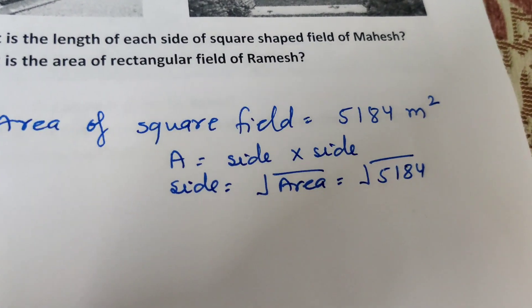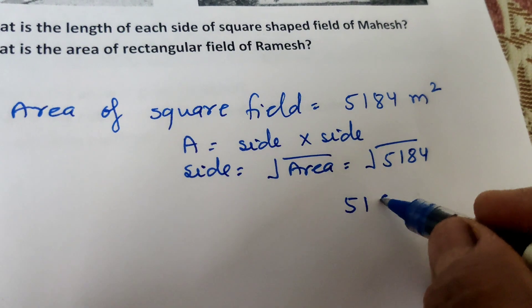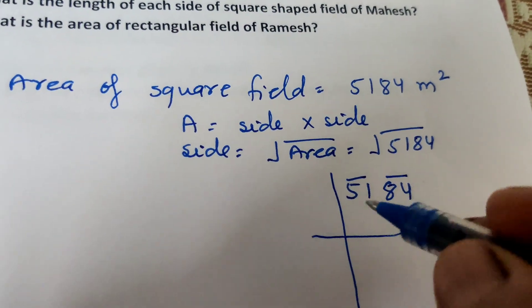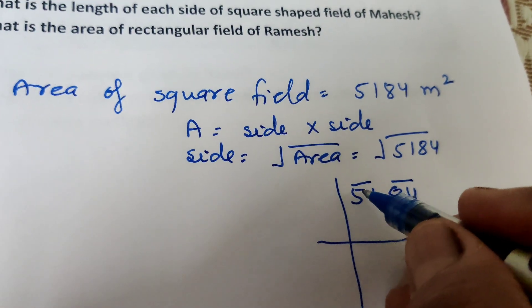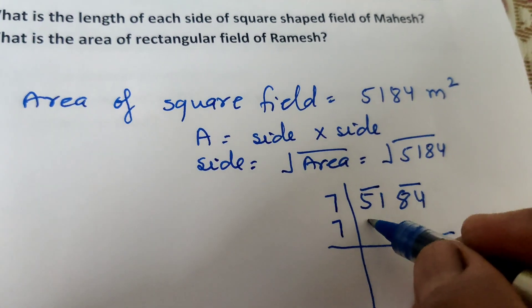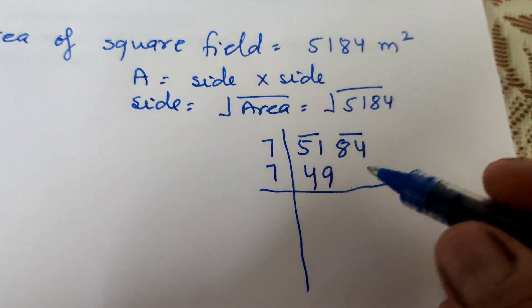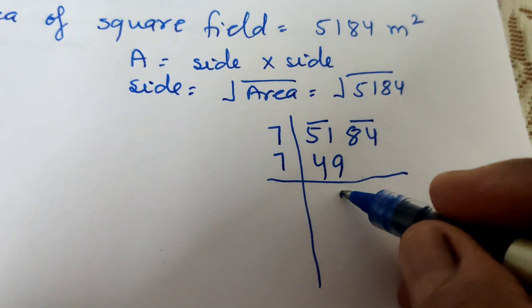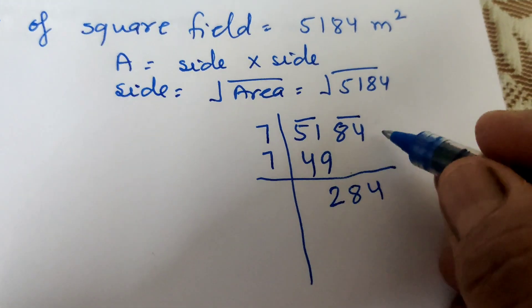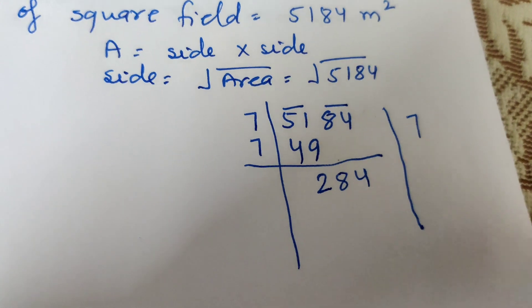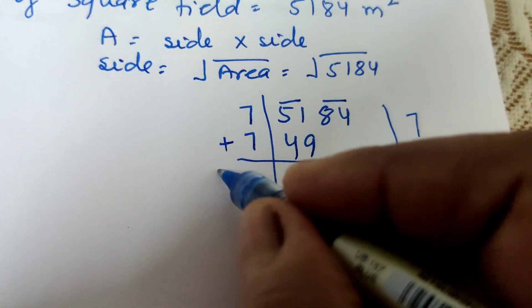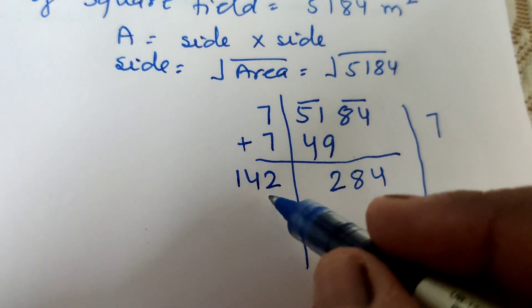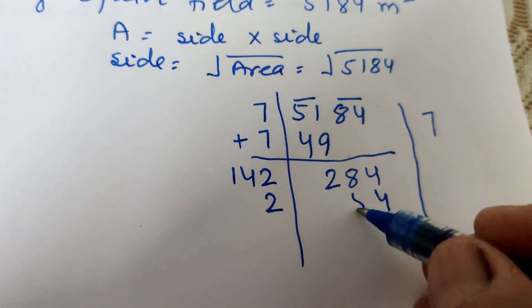Find the square root of 5184 using the long division method by pairing the digits: 84 and 51. For the first pair 51, we find 7 × 7 = 49. For 8 × 8 = 64. For the second pair 84, we continue the long division and write the side value here.